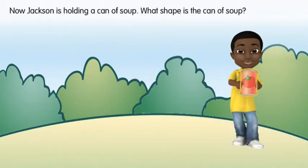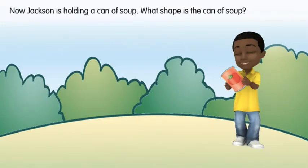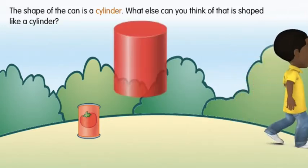Now Jackson is holding a can of soup. What shape is the can of soup? The shape of the can is a cylinder.